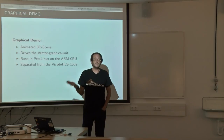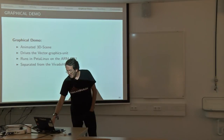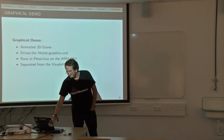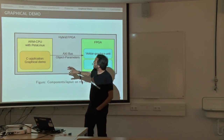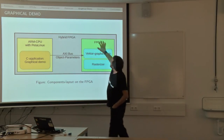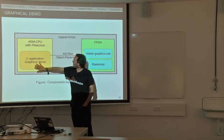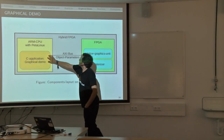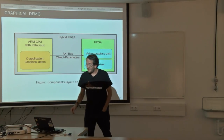The demo runs on PetaLinux, which is a distribution from Xilinx especially for these hybrid FPGAs, and it is separated from the Vivado HLS projects because it runs on Linux. The FPGA contains both the FPGA fabric — where the vector graphics unit and rasterizer live — and the ARM cores, where Linux and the graphical demo application run. Via a bus system, the object parameters are driven from the application into the vector graphics unit.